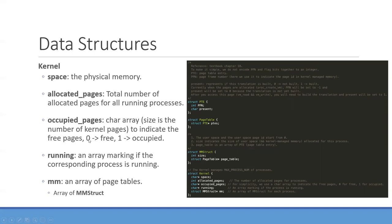The size of the 'occupied_pages' array equals the number of kernel pages. Zero means the page is free and one means it is occupied. 'running' is an array marking whether the corresponding process is running. Finally, 'mm' is an mm_struct array — an array of page tables, one per process.